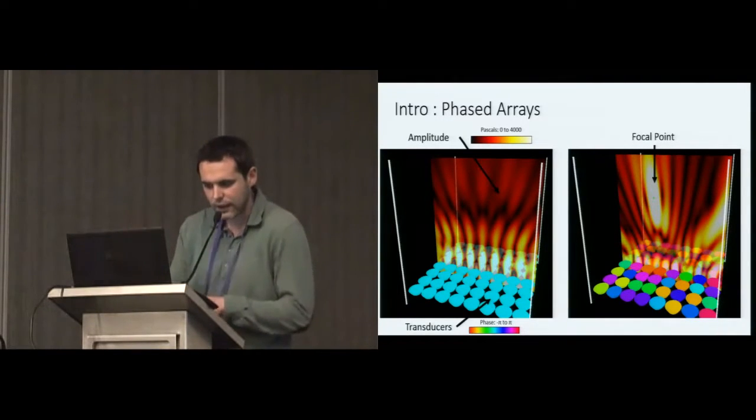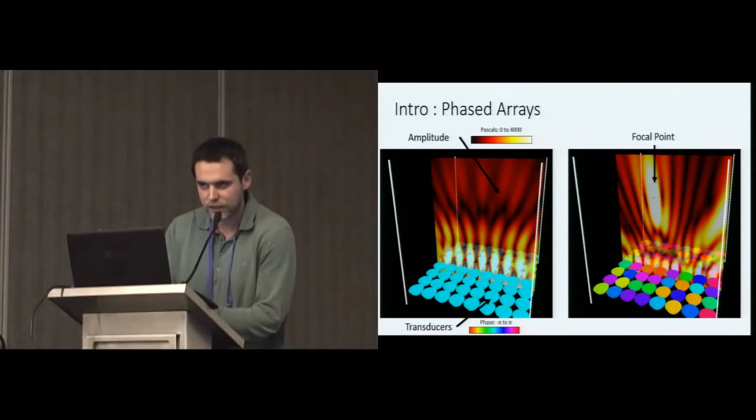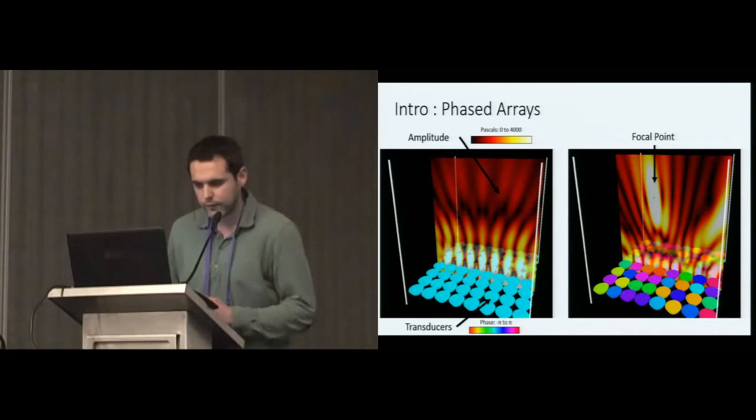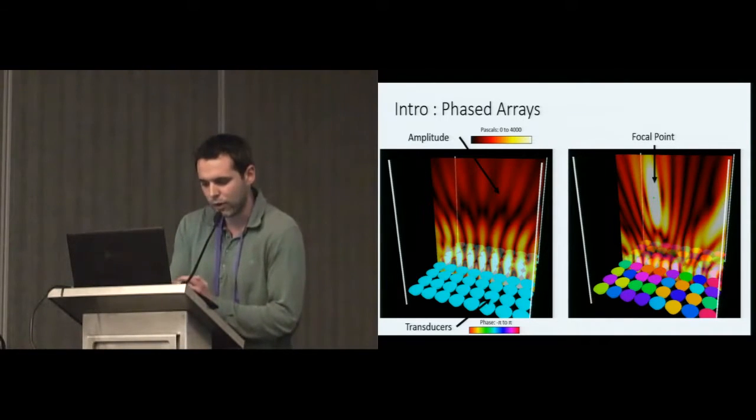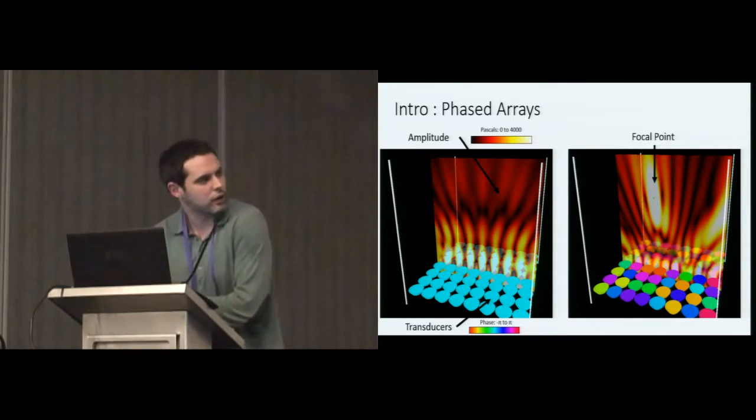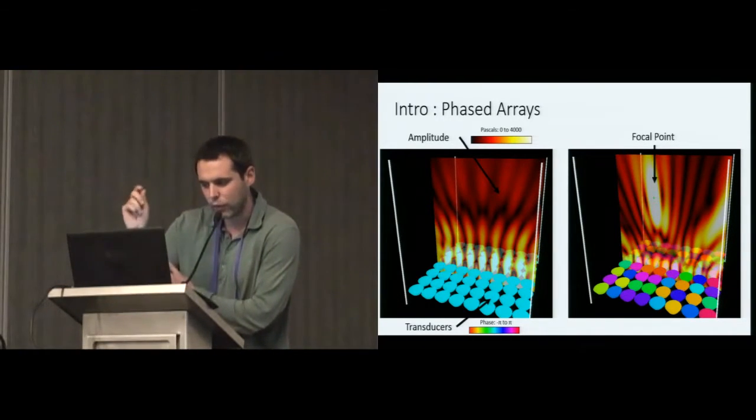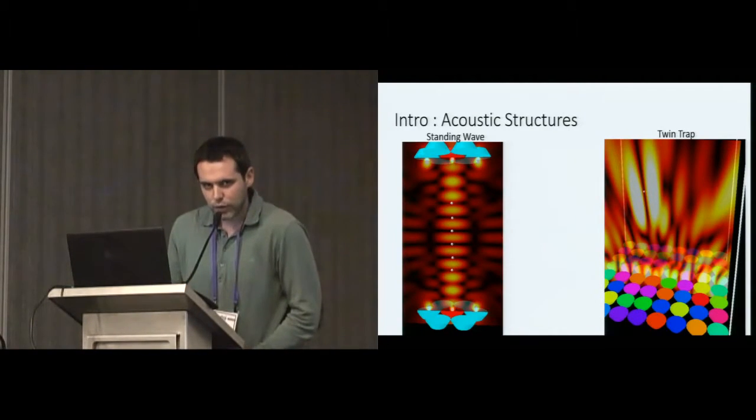Next thing with phase is that you can have what's called phase arrays. Phase arrays are lots of emitters, they are all emitted with the same amplitude, same frequency, and just by changing the phase, you can completely control the acoustic field. Here, on the left, you can see no phase control, all the transducers, they have zero phase. And on your right, you can see that we have created a focal point, but we want it just by changing the phase of the transducers.